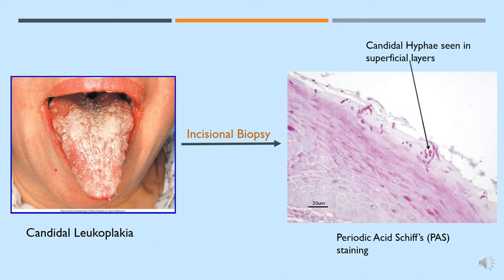For a patient identified as having Candida leukoplakia, a scrape will show images similar to the previous slide. However, when a biopsy tissue section is stained by periodic acid-Schiff staining, hyphae are seen in the superficial layers of the epithelium. Long-standing Candida infection can lead to hyperplastic Candida lesions in the oral cavity, also described as Candida leukoplakia.